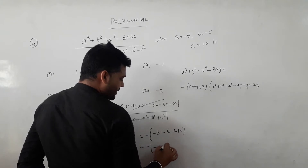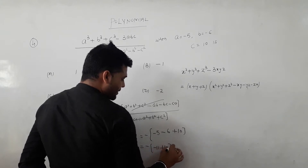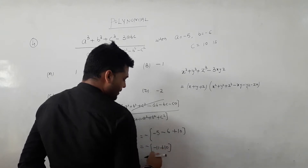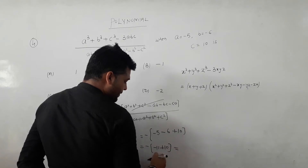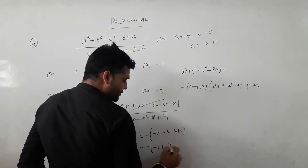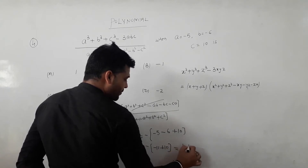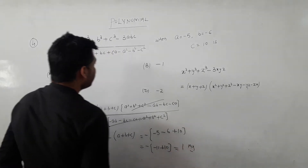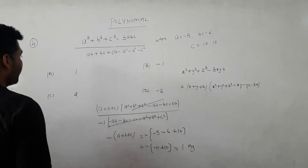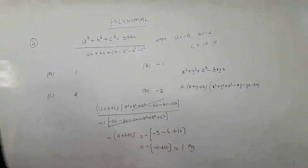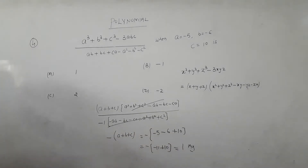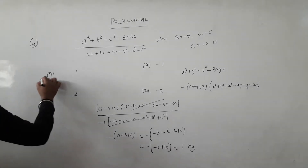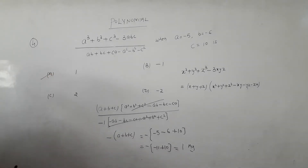So minus 7 plus 10 gives minus 1 plus 2, which equals plus 1. So the answer is Option A, which is plus 1.